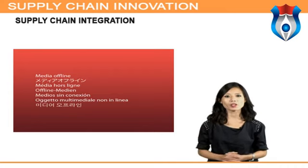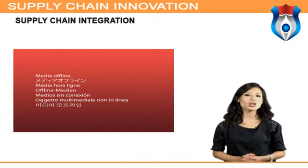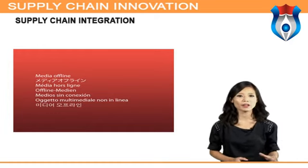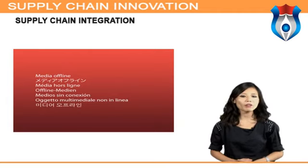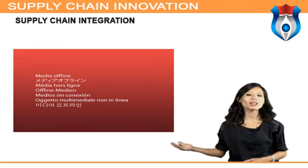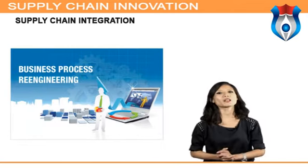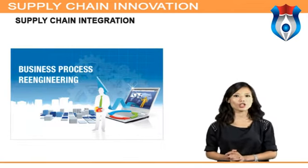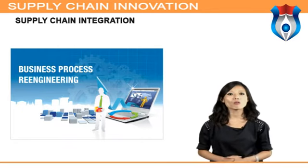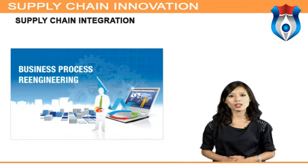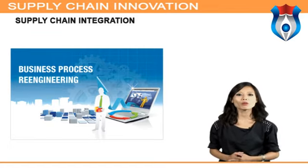For internal integration, which is process-oriented, firms need to build a borderless, flat organization through BPR (business process re-engineering), combined with ICT-based advanced production modes such as MRP II (manufacturing resources planning), ERP (enterprise resources planning), lean production, agile manufacturing, and concurrent engineering. BPR is a fundamental approach for internal integration within the focal firm, which emphasizes fundamental rethinking and radical redesign of business processes to achieve dramatic improvement in critical measures of performance such as cost, quality, service, and speed.